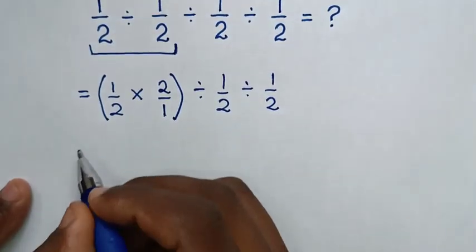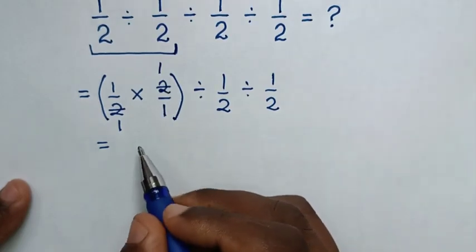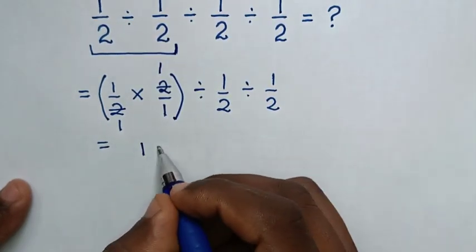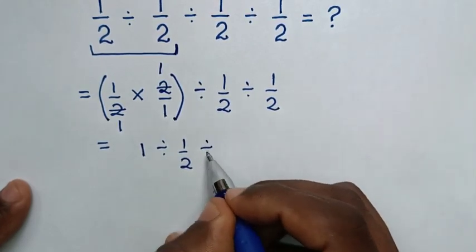Then in the next step, it will be equal to... To simplify, this 2 cancelled by 1 and this by 1. So here inside the bracket, it is 1, then divided by 1 over 2, then divided by 1 over 2.